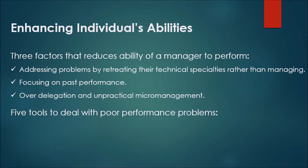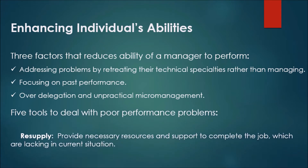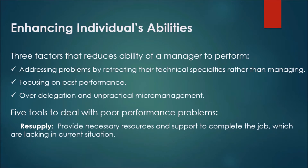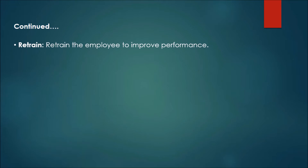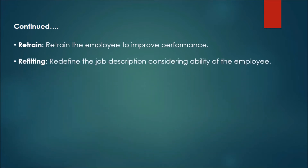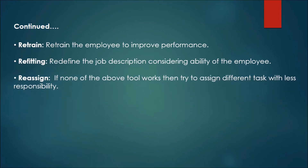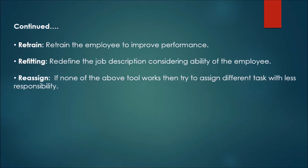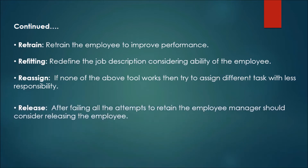Five tools to deal with poor performance problems are: Resupply — provide necessary resources and support lacking in the current situation; Retrain — retrain the employee to improve performance; Refit — redefine the job description considering the employee's ability; Reassign — if none of the above work, assign a different task with less responsibility; Release — after failing all attempts to retain the employee, the manager should consider releasing them.